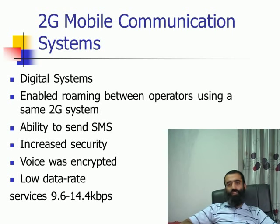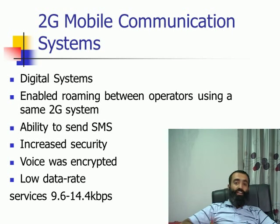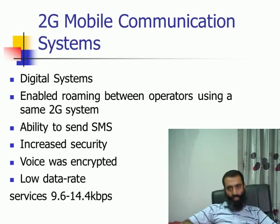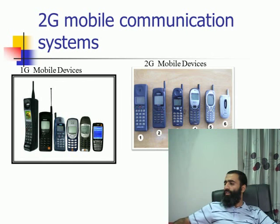You also had the ability to send SMS, security increased because the voice was now encrypted, and for the first time in 2G systems you had the possibility to use data networks and the internet. The data rate that these systems were offering at that time was quite limited — it was from 9.6 kbps to 14.4 kbps — so it was not much.